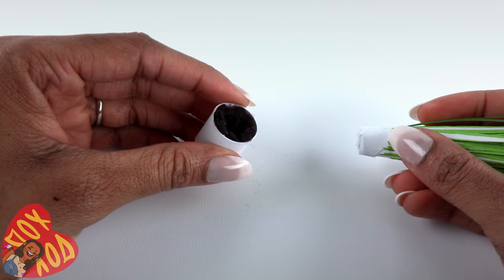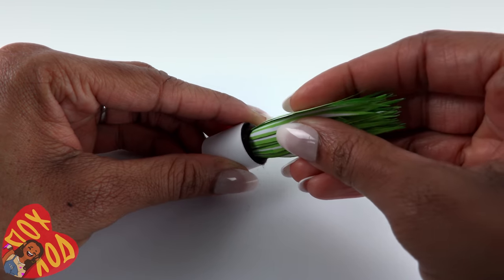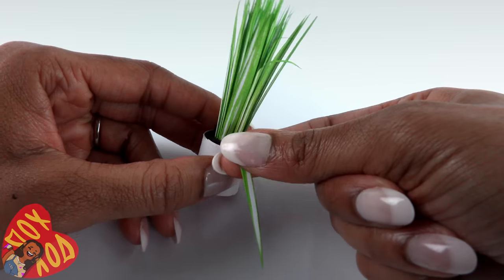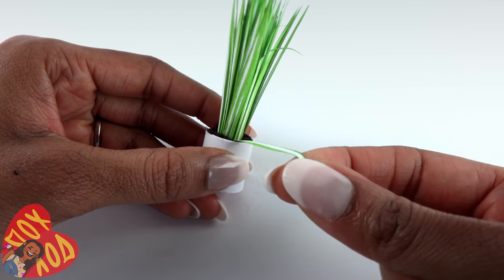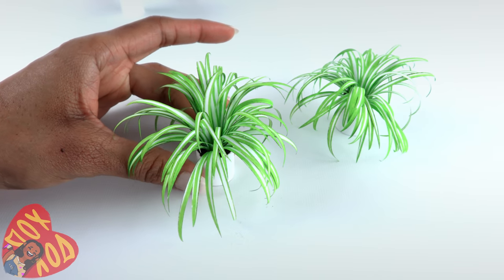Make a pot without the tissue, then glue the leaves inside. Use your finger to gently curl the leaves, one at a time, to make spider plants.